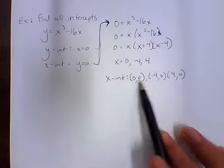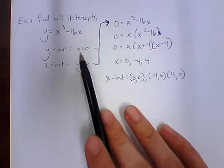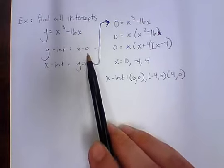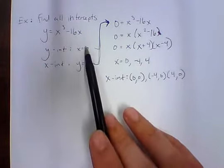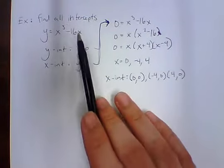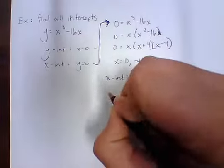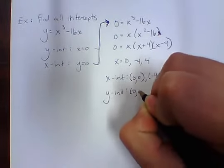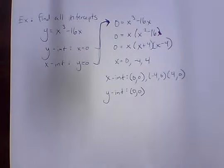We found our x-intercepts by plugging in 0 for y. Now let's find our y-intercept. If we take our original function and plug in 0 for x, we just get y equals 0. So doing some mental math, I can see that we have a y-intercept at (0, 0), and that would be all.